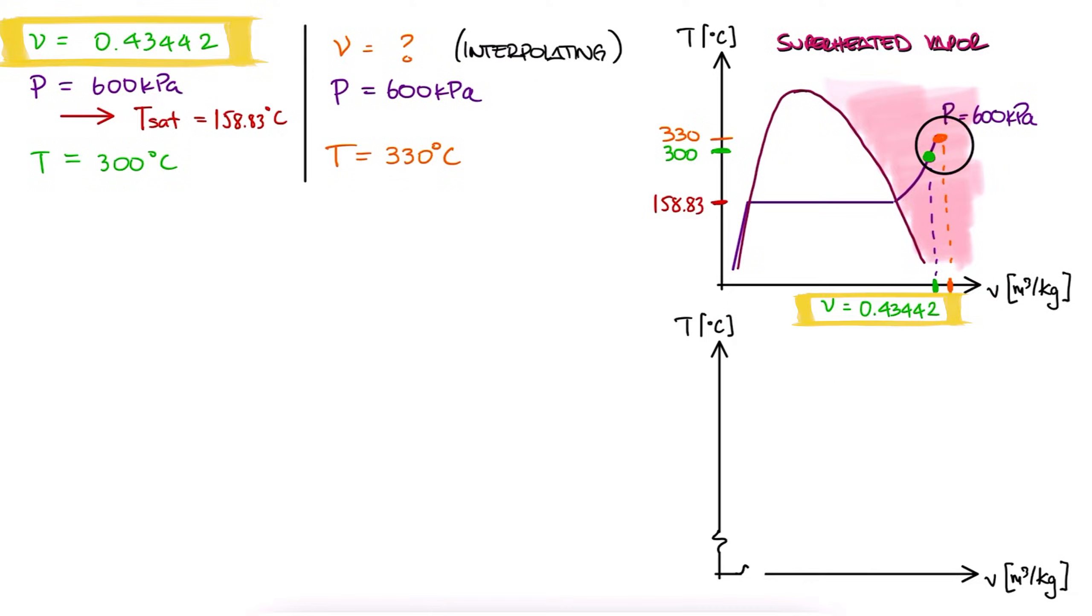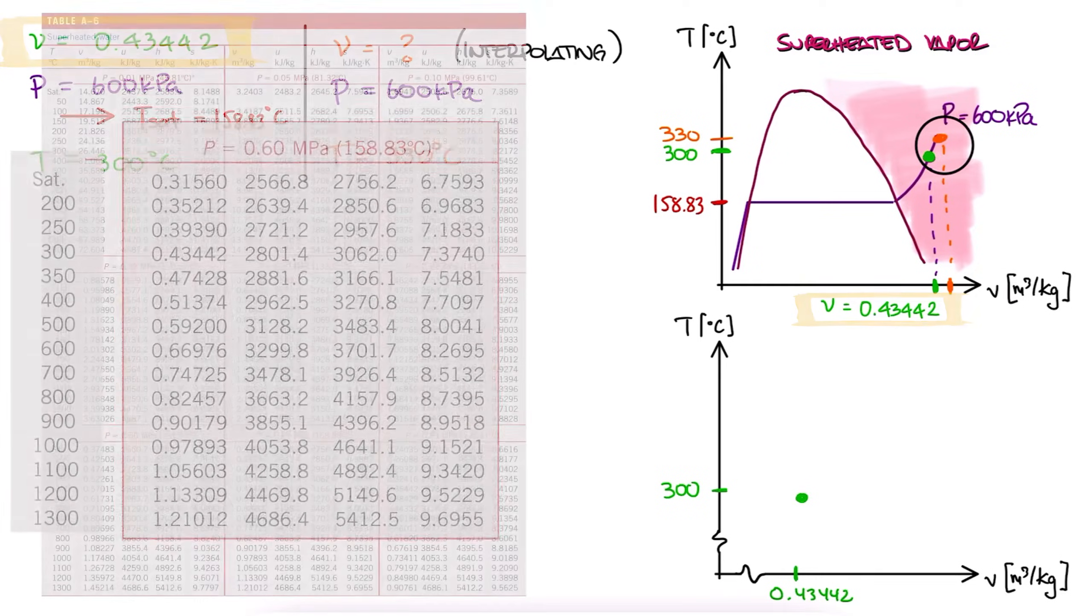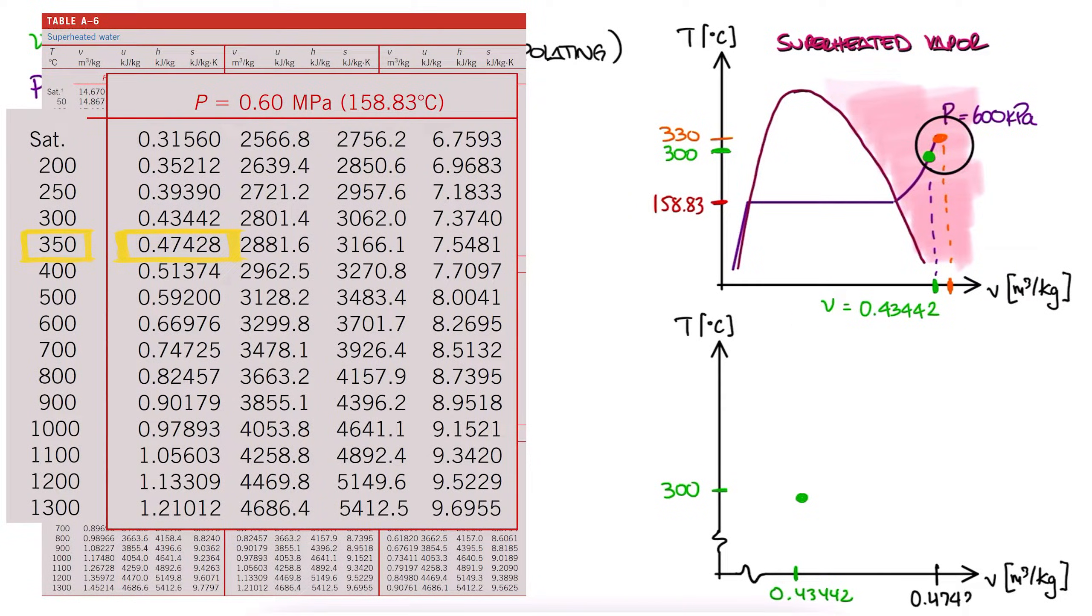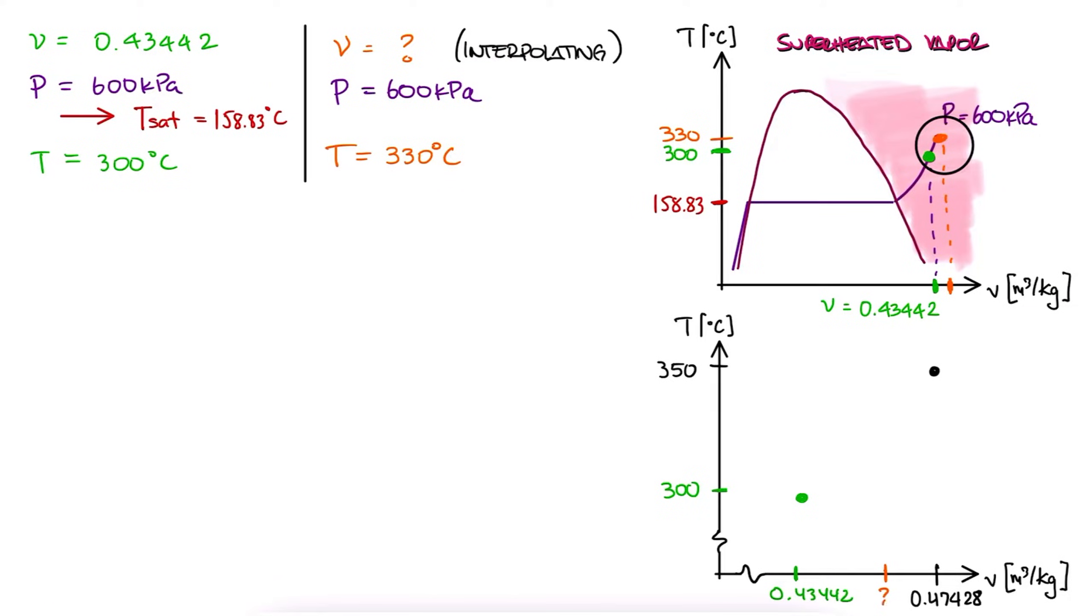We have a specific volume value for 300 degrees Celsius, and a value for 350 degrees Celsius. And we want that value for 330 degrees Celsius. Since we're assuming a linear behavior between these points, the slopes should be the same between 300 and 350, 300 and 330, and 330 and 350.